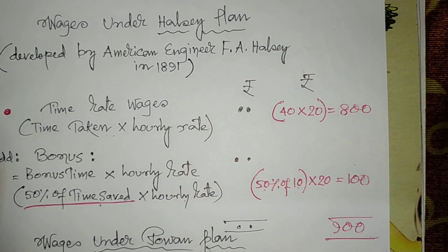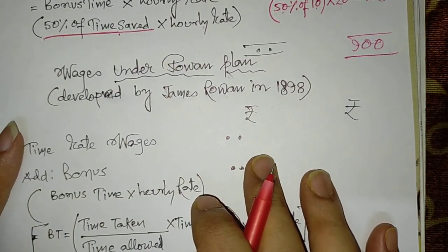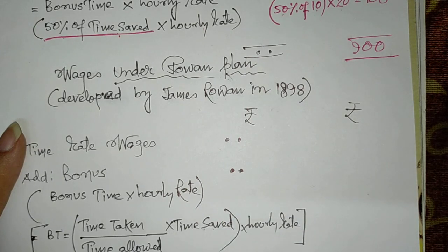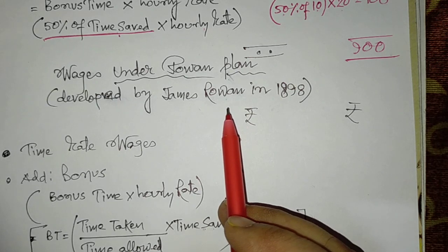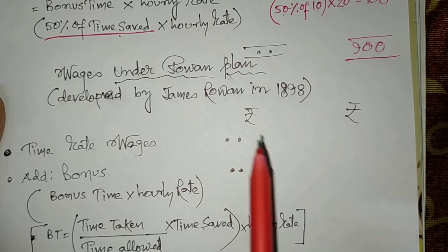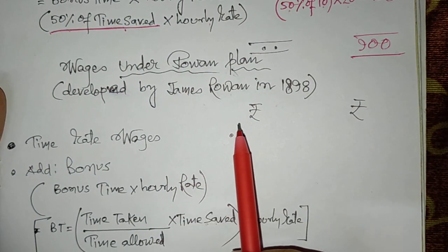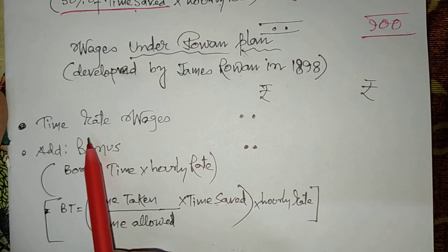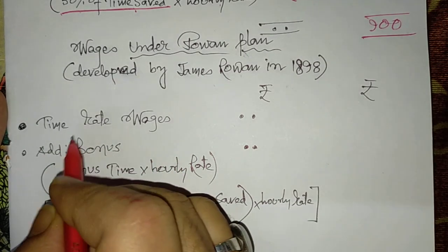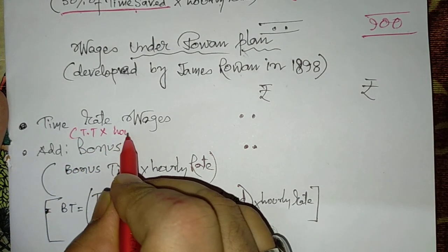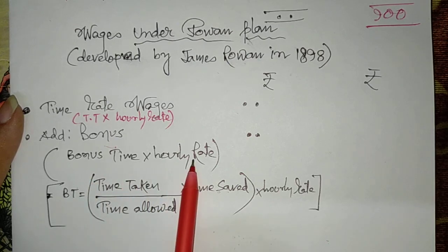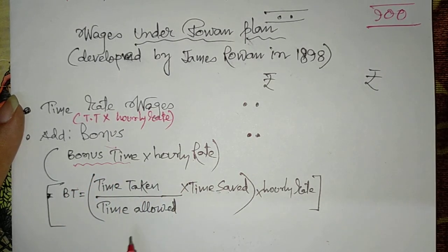After 7 years of the Halsey plan being published, James Rowan, an American engineer, introduced a new plan known as the Rowan plan. Rowan followed the Halsey plan in concept — time rate wages are still paid using the same formula: time taken × hourly rate. A bonus is also added, but the formula for bonus time calculation changed from the Halsey plan.